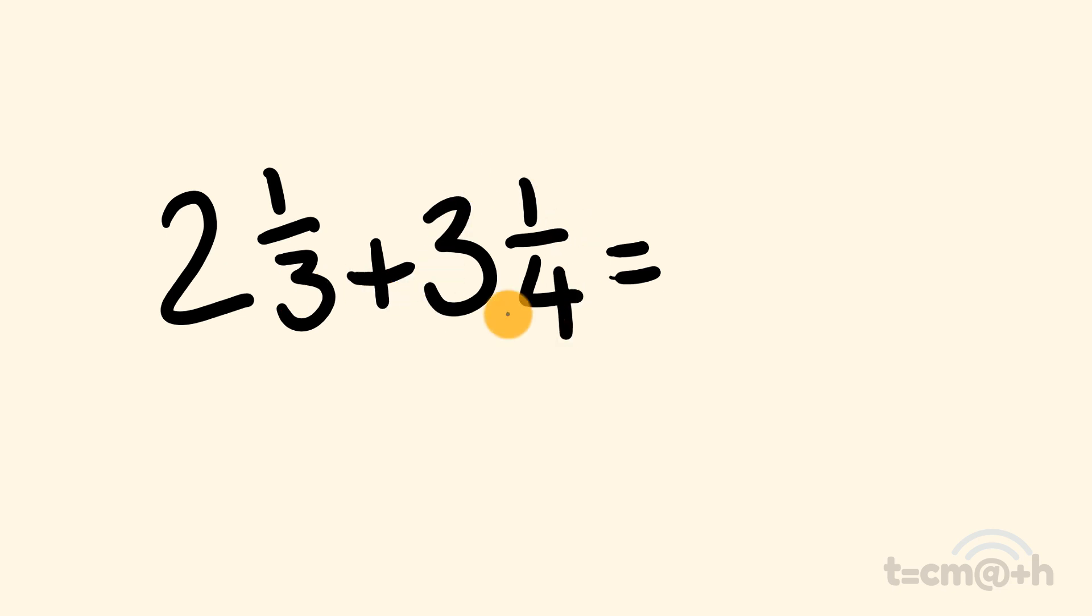The first thing we're going to do is we are going to get our denominator simply by multiplying here. So we have three times four and that is equal to 12.